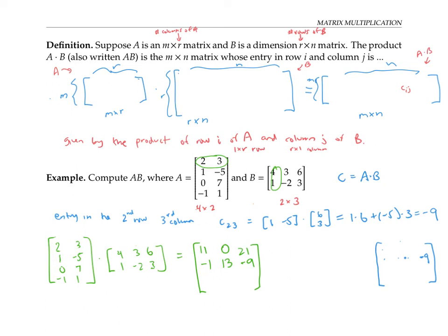For the third row, we take the third row of A and multiply it by each column of B in turn. Zero times four plus seven times one is seven. Zero times three plus seven times negative two is negative 14. Zero times six plus seven times three is 21. Finally, the fourth row of A times each column of B gives negative three, negative five, negative three. And we have our complete matrix product.